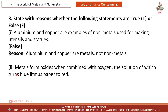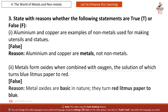Second statement: Metals form oxides when combined with oxygen, the solution of which turns blue litmus paper to red. This is also false. Reason: Metal oxides are basic in nature — they turn red litmus paper to blue, not the other way around.